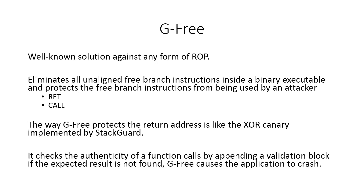G-free is a well-known solution against any form of ROP. It eliminates all unaligned free branch instructions inside a binary executable and protects free branch instructions from being used by an attacker, such as a return or call instruction.